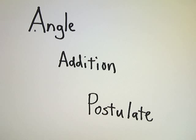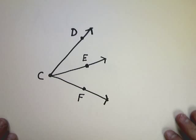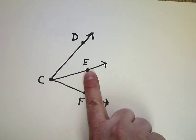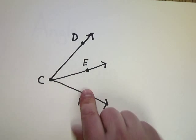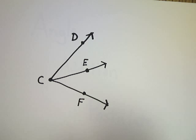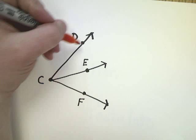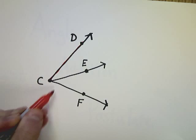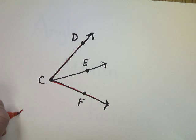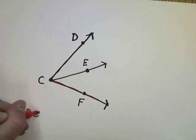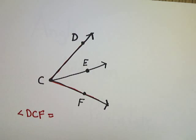The idea of the angle addition postulate refers to when you have an angle that has a point in between the sides of the angle, so it splits it up essentially into two angles. The idea is that this big angle here, so the big one, so angle in this case DCF, is actually equal to the sum.